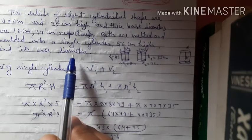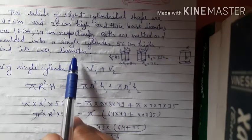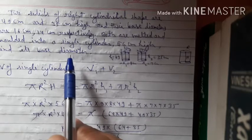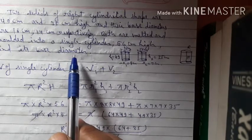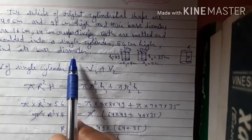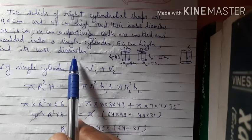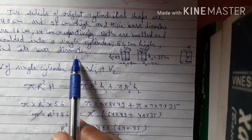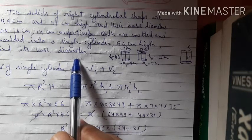There are 2 cylinders; they are melted to form a new cylinder. Whenever any solid is melted and a new shape is formed, the volume of both remains the same. So: volume of new cylinder = volume of first cylinder + volume of second cylinder.